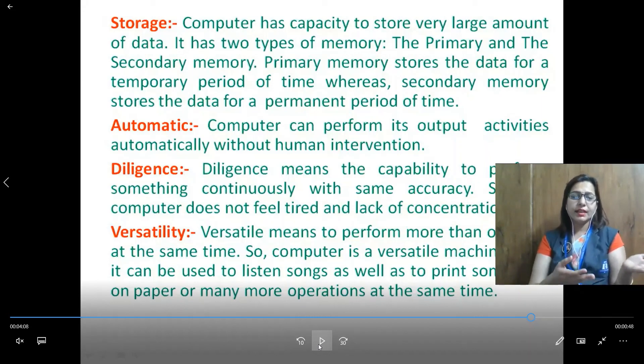And one more thing that is it reduces the paperwork, redundancy of paper. This is all about characteristics of computer system. Watch this video and go through with your book. Read the chapter. Next part of this chapter I will give you in next video.